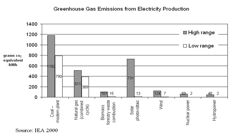Climate change mitigation consists of actions to limit the magnitude or rate of long-term global warming and its related effects. Climate change mitigation generally involves reductions in human emissions of greenhouse gases. Mitigation may also be achieved by increasing the capacity of carbon sinks, e.g., through reforestation. Mitigation policies can substantially reduce the risks associated with human-induced global warming, according to the IPCC's 2014 assessment report.